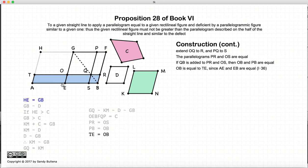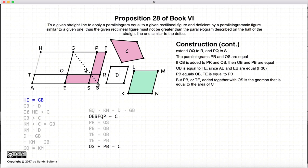Now TE is equal to OB, because E bisects AB, so they're equal. PB is equal to OB, so that means that PB is equal to TE, so TE is equal to PB.